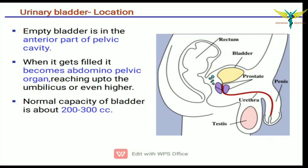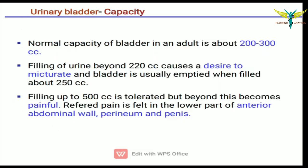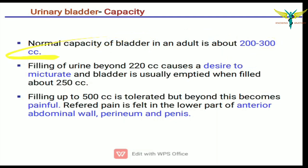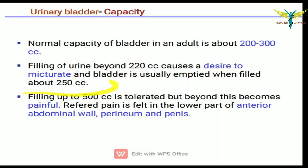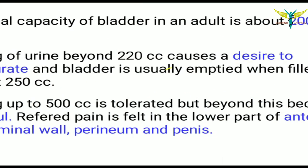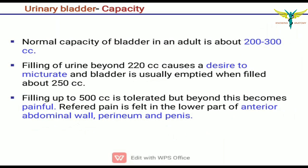The normal capacity of the bladder is about 200 to 300 cc. Filling of urine beyond 200 cc causes a desire to micturate, and the bladder is actually emptied when it is filled to about 250 cc. Filling up to 500 cc is tolerated, but beyond this it becomes painful.